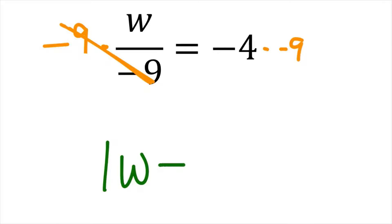So one w, now because negative nine divided by negative nine is one, is going to equal negative four times negative nine. There's two negatives being multiplied, two is even, so the answer is positive. Four times nine is 36.